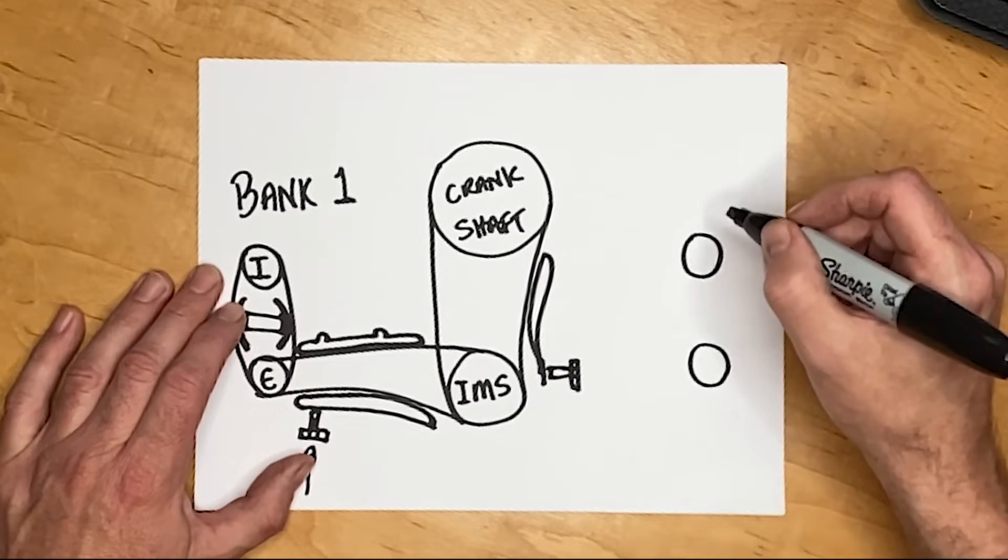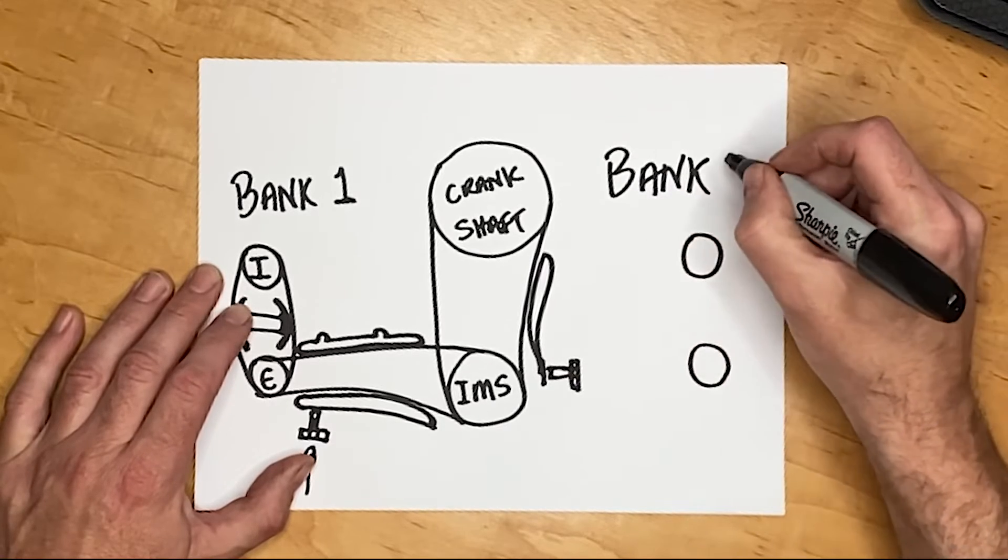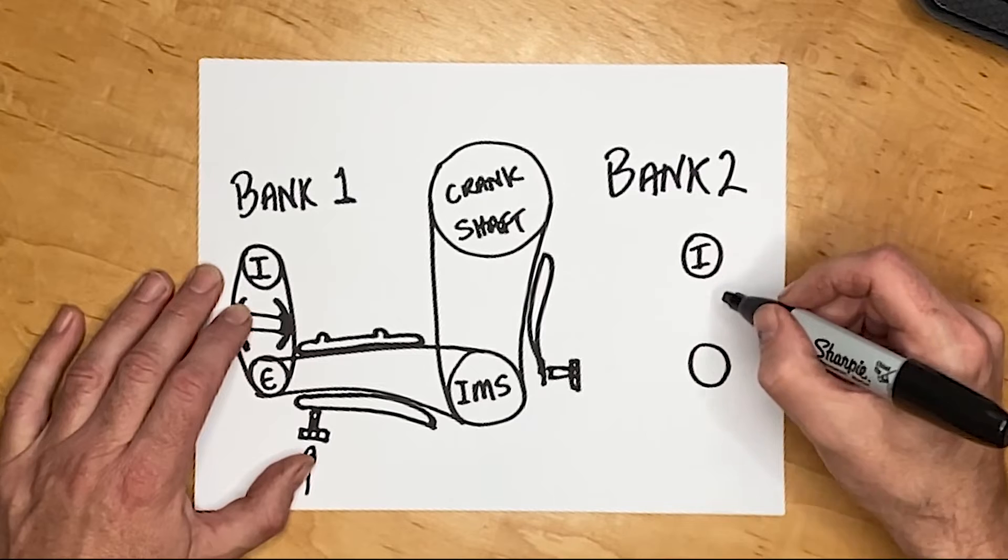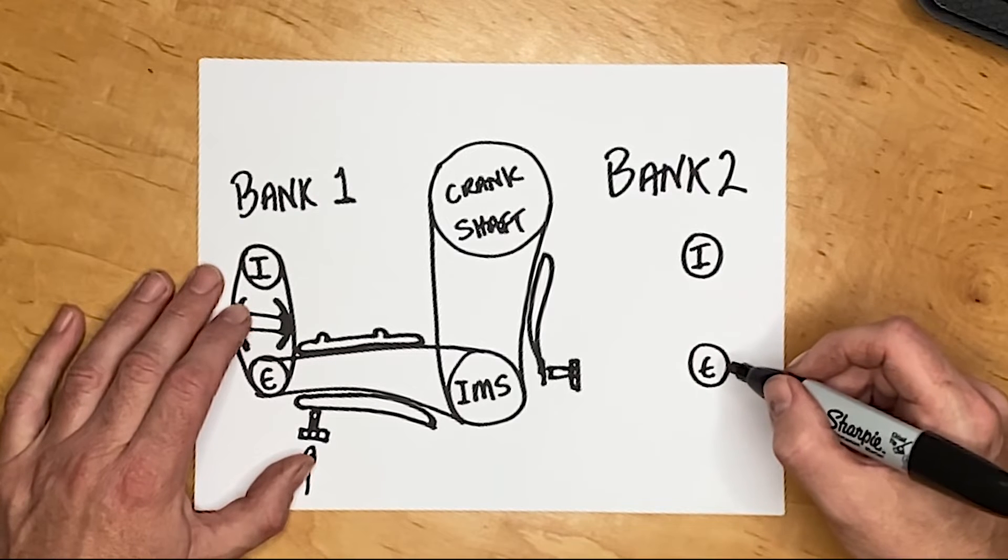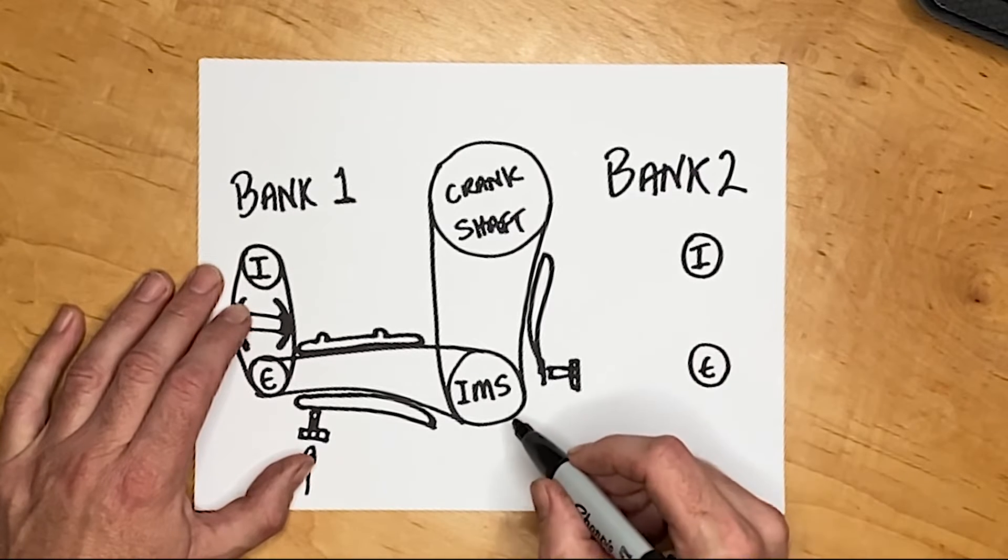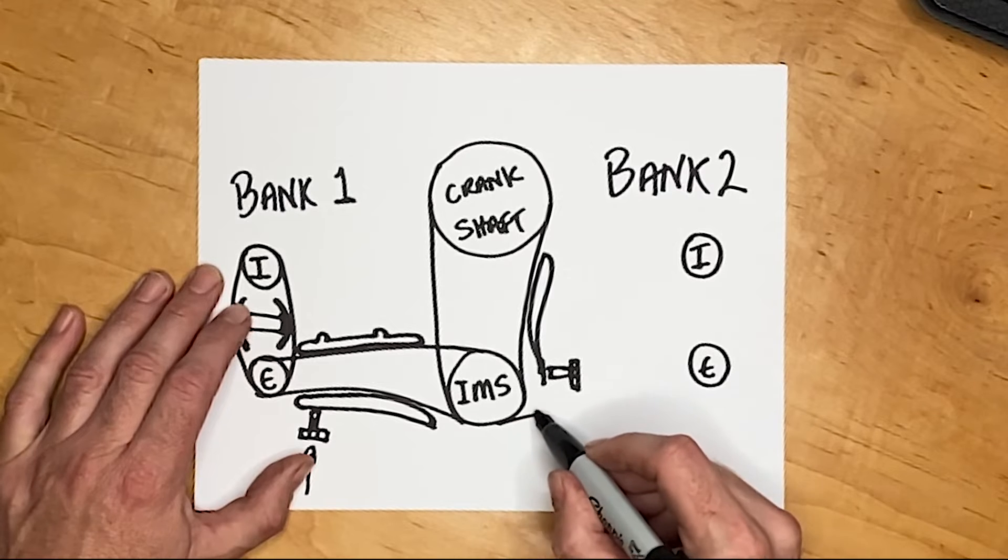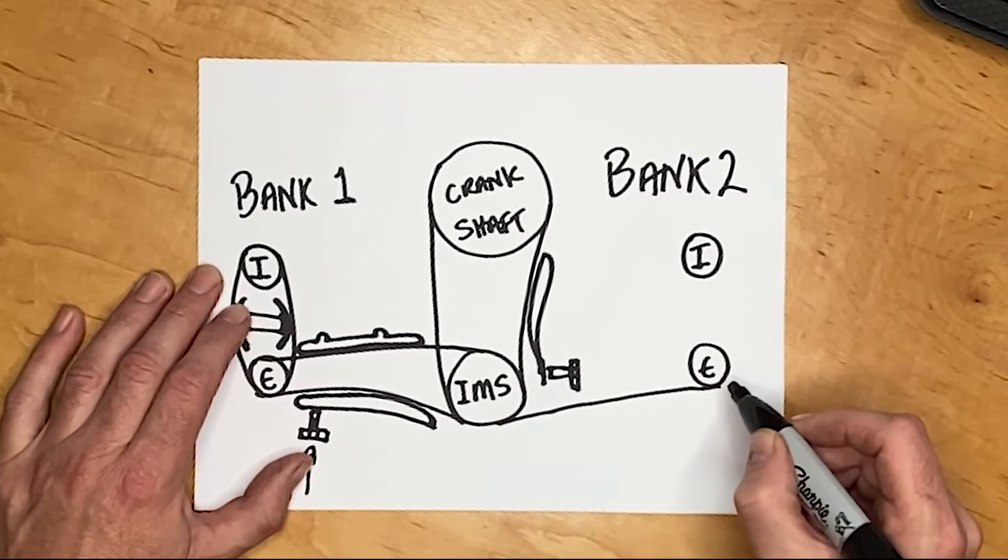And then Bank 2 is the same as Bank 1. I'm beginning to feel like it's sort of the same thing but sort of spun upside down and backwards. Anyway, at the top it still has the intake cam and on the bottom is the exhaust cam.